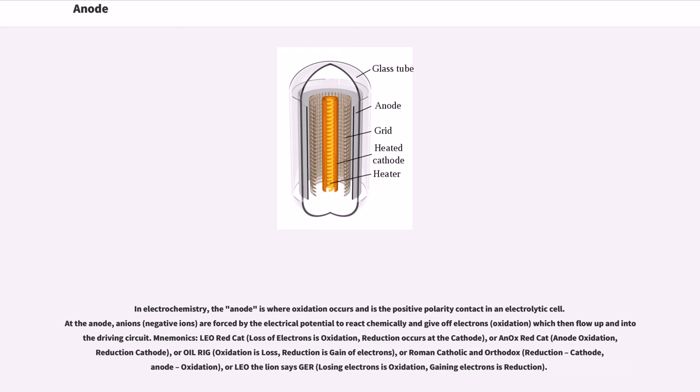Or an ox red cat (Anode Oxidation, Reduction Cathode), or OIL RIG (Oxidation Is Loss, Reduction Is Gain of electrons), or Roman Catholic and Orthodox (Reduction Cathode, Anode Oxidation), or Leo the lion says GER (Losing Electrons is Oxidation, Gaining Electrons is Reduction).